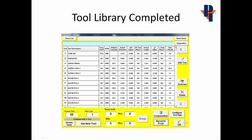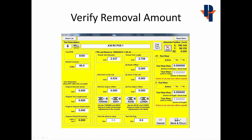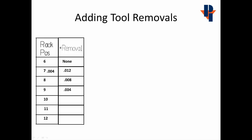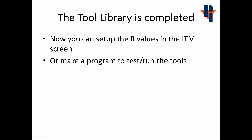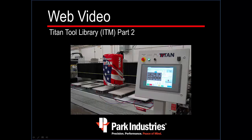The Tool Library is completed. If you would like to verify the removal amount, you can go to the Tool Edit of the first tool of the profile set. There you will see an X and Y Stock to be Left value. The Stock to be Left value should be equal to the sum of adding the following three tools' removal amounts. Now you can set up the R values in the ITM screen or make a program to test run the tools. Thank you for watching.